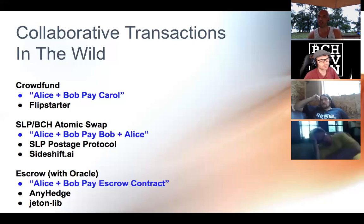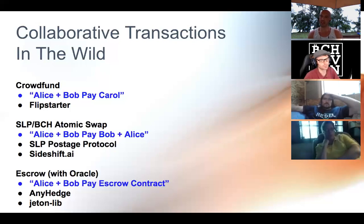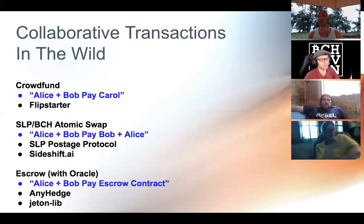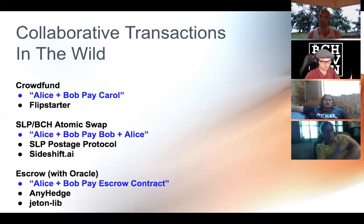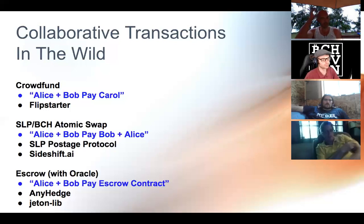SideShift.ai is also using a version of this. If you do BCH exchanges for SLP tokens they offer — SPICE, USDH, now USDT — it happens very quickly because they're doing almost the equivalent, though it's a little chained rather than fully collaborative. And then escrow with an Oracle — that's Alice and Bob paying an escrow contract — which is what people are excited about with AnyHedge.